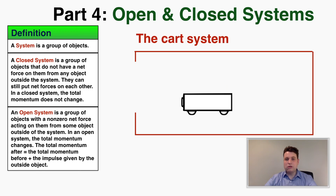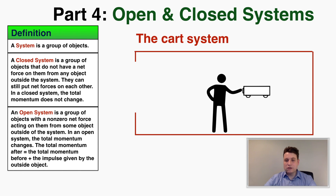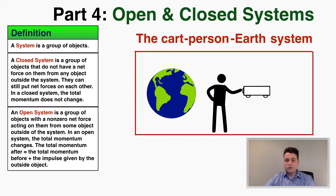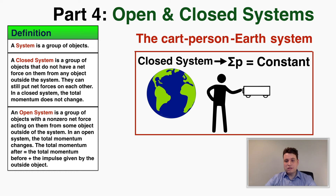Any open system could become a closed system if we just include all of the objects acting on each other. But if I include the person in the system, I also need to include the earth, because the person is putting a force of friction on the ground to prevent themselves from moving. So the only way to have a truly closed system is to include the person and the earth. You can turn an open system into a closed system, but then the math becomes harder because the total momentum includes the earth's enormous momentum, blowing up all calculations and making it impossible to calculate anything. So we want to keep some systems open to do math more easily.